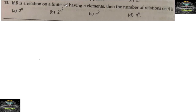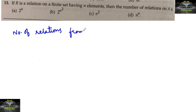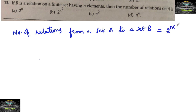If R is a relation on a finite set having n elements, then the number of relations on A is — we know that the number of relations from a set A to a set B is equal to 2 to the power of n into n.